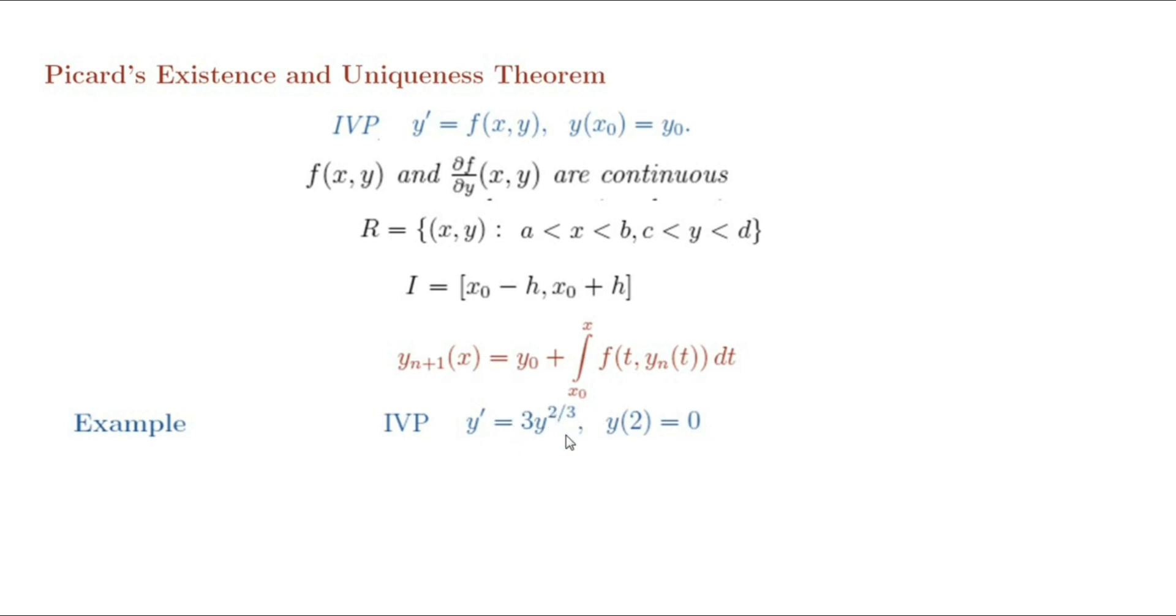Here, f(x,y) = 3y^(2/3), the first-order partial derivative of this function with respect to y is 2y^(-1/3).